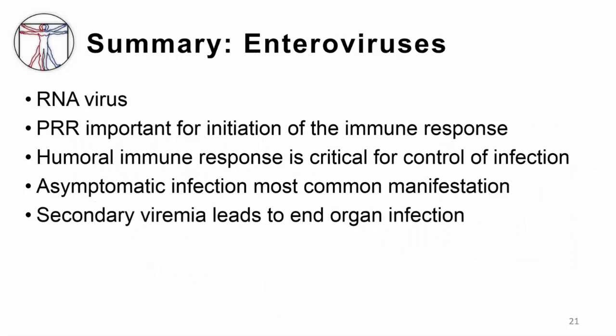In summary, enteroviruses are very common RNA viruses. Pattern recognition receptors are important for initiation of the immune response, and the humoral immune response is critical for control of infection. Because of the effectiveness of the immune response and the ubiquitous nature of the virus, most infections are asymptomatic. If there is no control, secondary viremia produces fever and leads to end-organ infection.